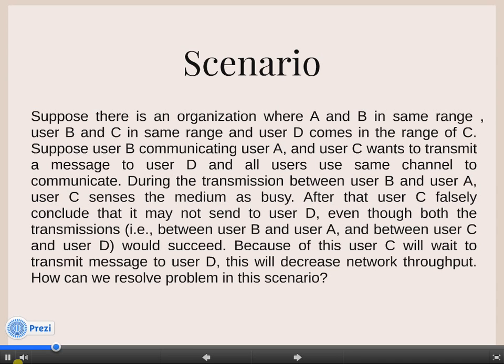During the transmission between user B and A, user C finds the medium is busy. So C falsely concludes that it cannot send to other node D, even though transmission could succeed. This unnecessary wastage of resources will decrease throughput of the network. How can we resolve this problem?